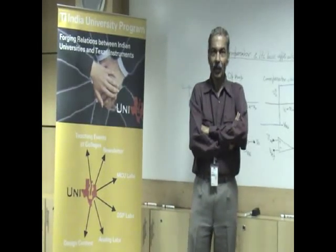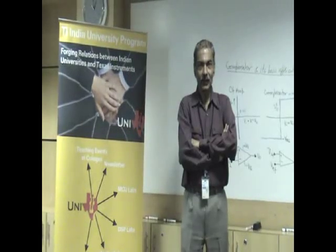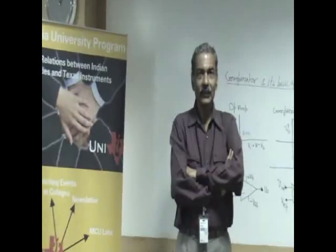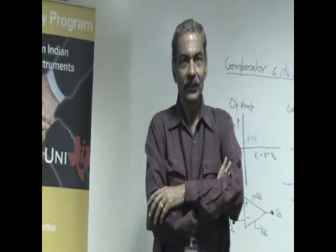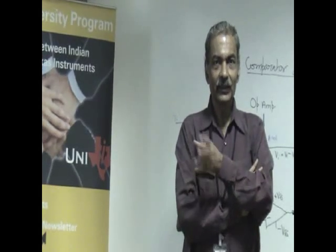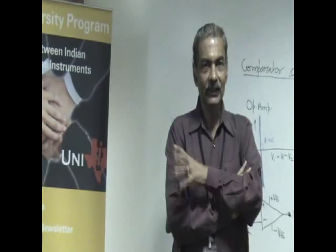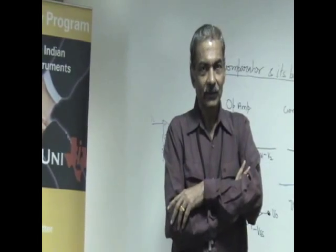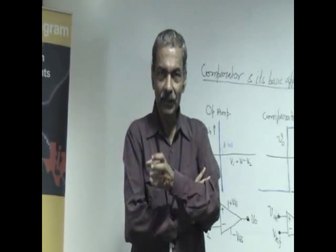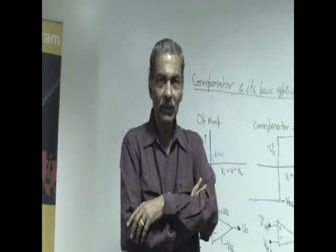We had discussed the operational amplifier, its use in negative feedback topologies and how it can be used to design amplifiers with gain which is determined by ratio of resistances, and how it leads to instrumentation amplifier which is nothing but a difference amplifier with a certain gain, fixed gain. Today we will discuss about the same amplifier being turned into what is called a comparator.